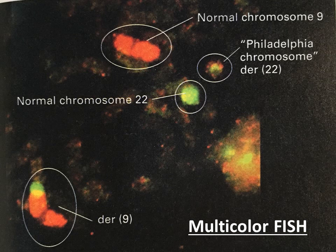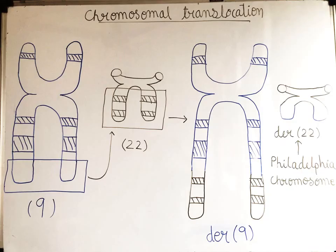A related technique called multicolour FISH can detect chromosomal translocations, which are associated with certain genetic disorders and specific types of cancers. For example, in nearly all patients with chronic myelogenous leukemia, the leukemic cell contains the Philadelphia chromosome — that is, a shortened chromosome number 22 and an abnormally long chromosome number 9.